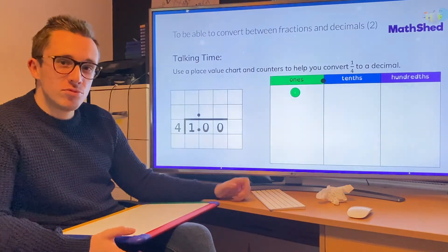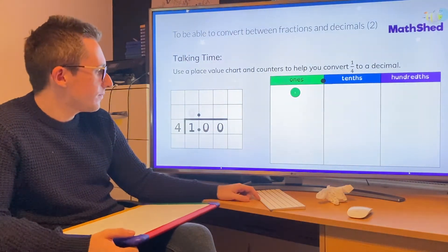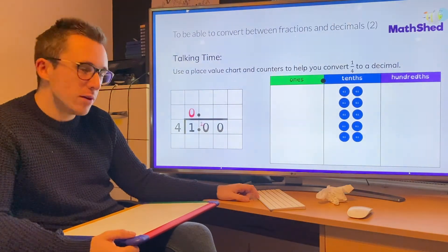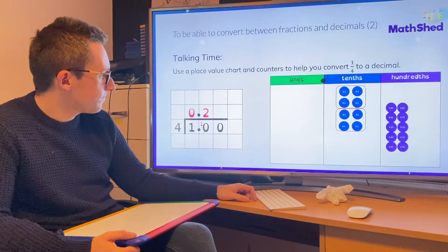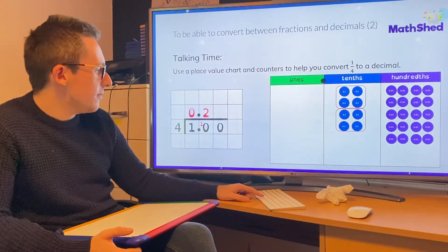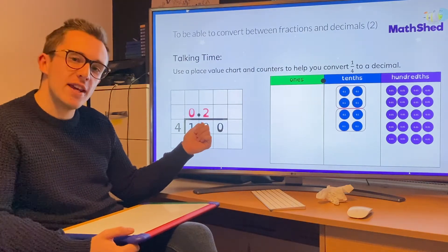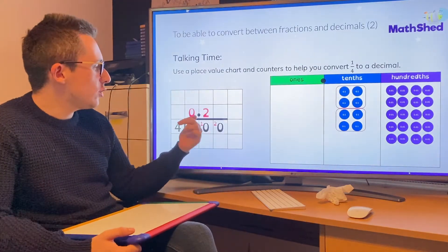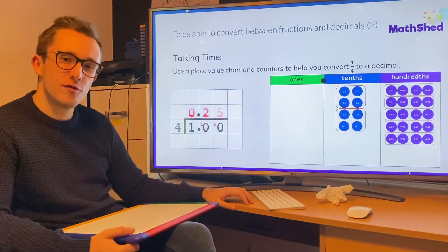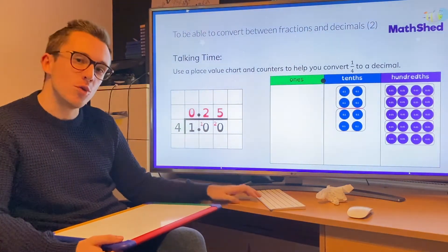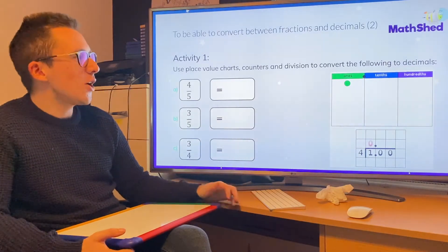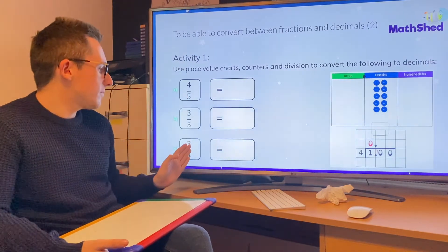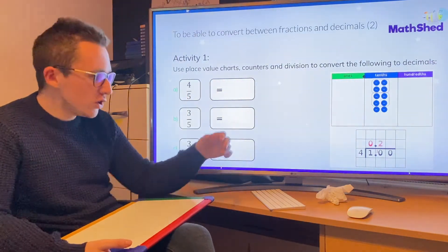A quarter, no different. We do exactly the same process. Four doesn't go into one. We carry the one over. Now, the difference here is four goes into ten twice, but it has two left over. So we carry that two over again. We then do four into twenty, which in this case would go five times. So the answer is 0.25. Okay then, using that method, can you have a go please at turning these into decimals using division?